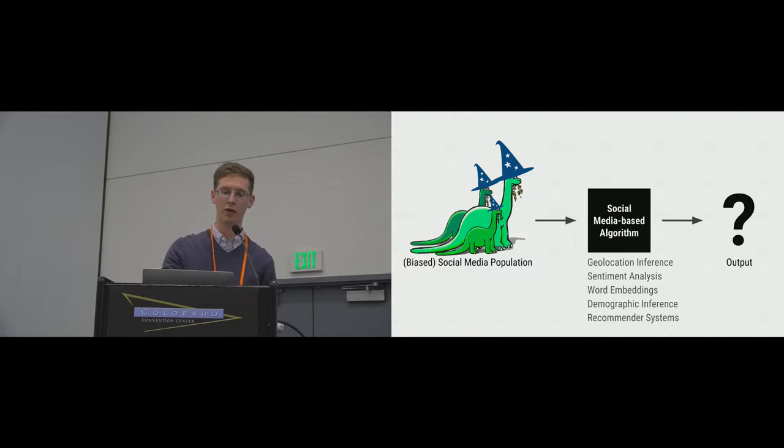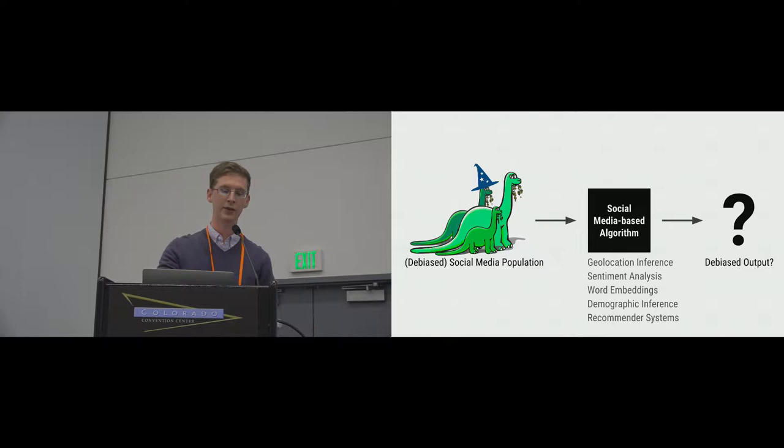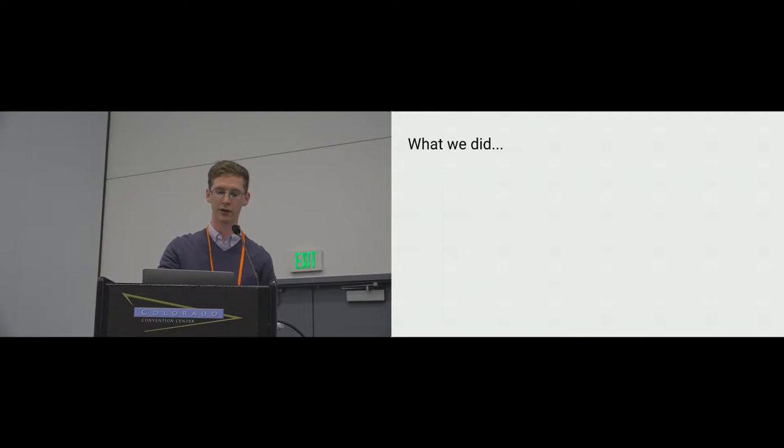What we didn't know, though, is how these population biases affect the many algorithms that are built on top of social media data. Specifically, does population bias in social media lead to biases in the output of social media based algorithms? And if so, does correcting for population bias, as has been suggested as a best practice for research, de-bias the output of these algorithms?